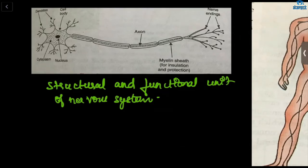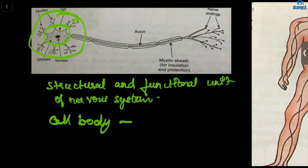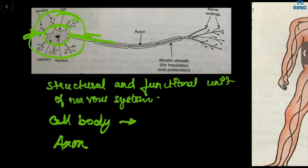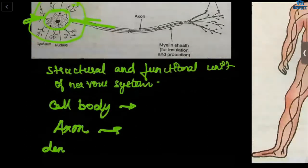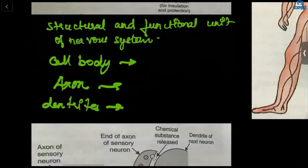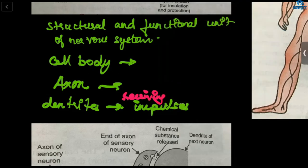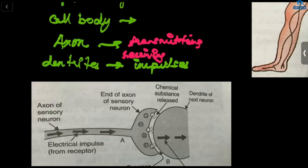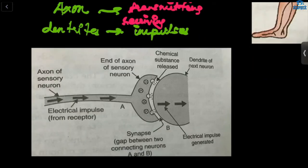A neuron has a cell body containing cytoplasm and a nucleus. From the cell body there are long fibrous extensions: the longer one is called the axon, and the shorter ones are called dendrites. The dendrites receive the impulse, and the axon transmits it.